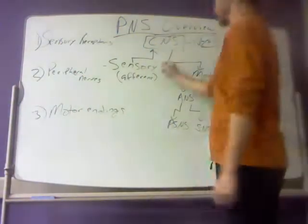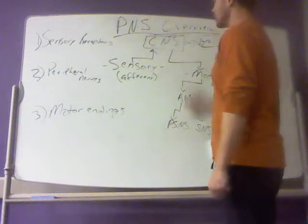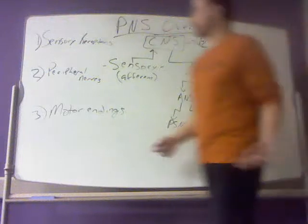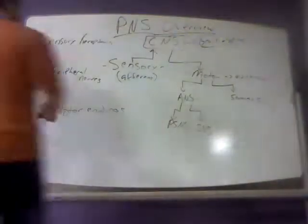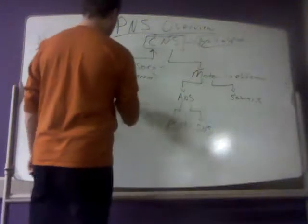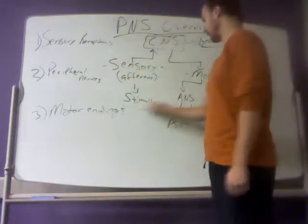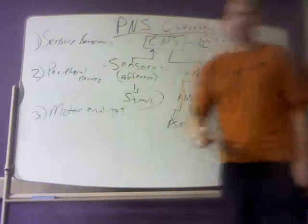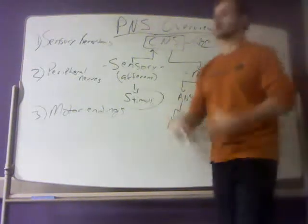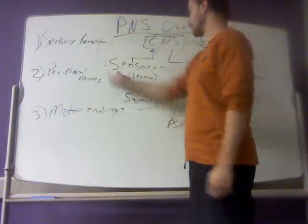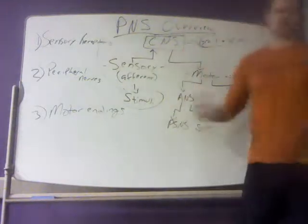The sensory aspect of the peripheral nervous system is basically detecting changes in our environment. A good word to describe those changes in our environment is stimuli — or a stimulus, singularly. There are various stimuli that can upset or disrupt our homeostasis, and we need to be able to detect that. We use sensory receptors to pick up changes in our environment.